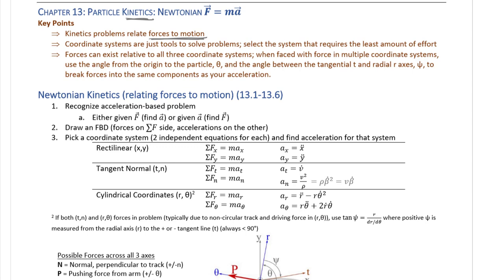We express motion in three different coordinate systems, the same as we did for particle motion. Remember that coordinate systems are simply tools to solve problems, so you want to select the one that makes your life the easiest. Fundamentally, select the coordinate system in which your acceleration is based, or one in which you can quickly solve for acceleration, and then get all of your force components into that same coordinate system.